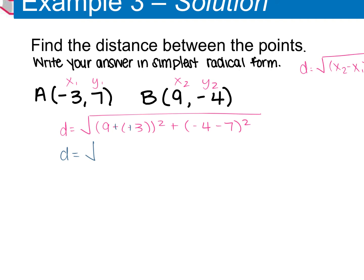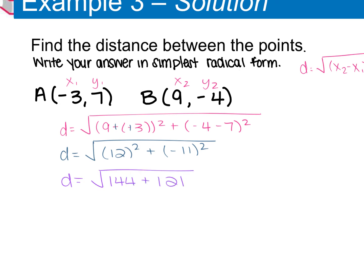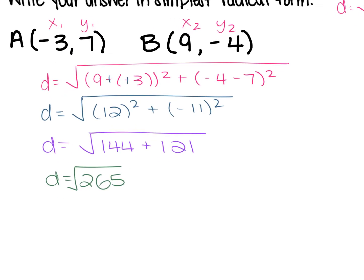The double negatives turn into positives, so 9 + 3 is 12. The −4 − 7 gives us −11. So we have the square root of 144 + 121. Adding those together: 1 + 4 = 5, 4 + 2 = 6, 1 + 1 = 2, giving the square root of 265. Since 265 = 5 × 53, and 53 is not divisible by anything, this does not simplify — it is just the square root of 265.